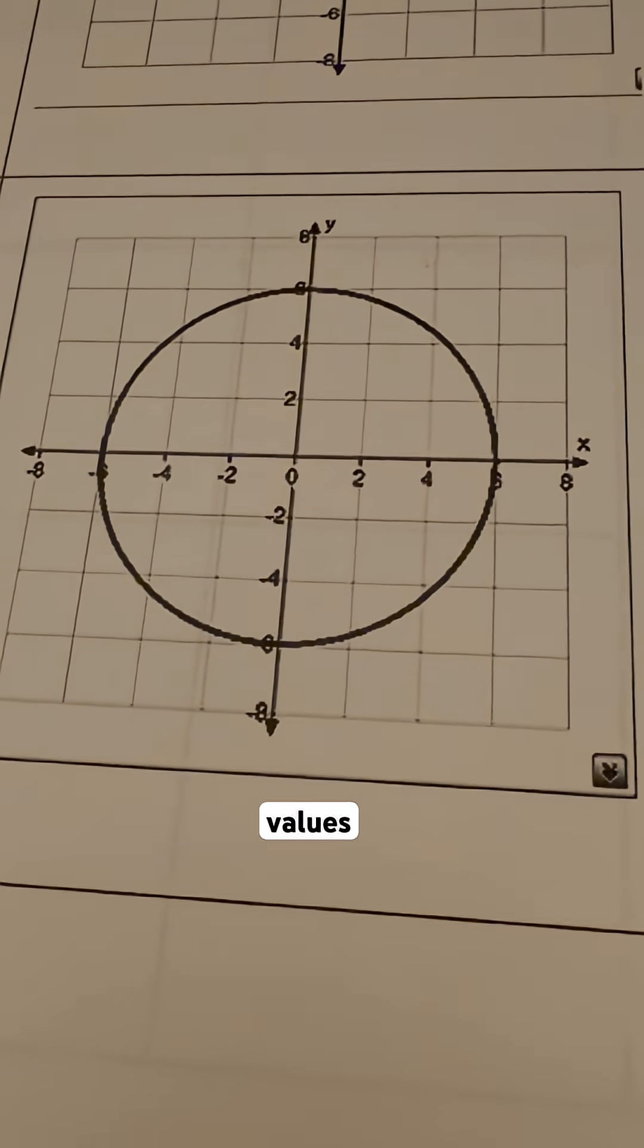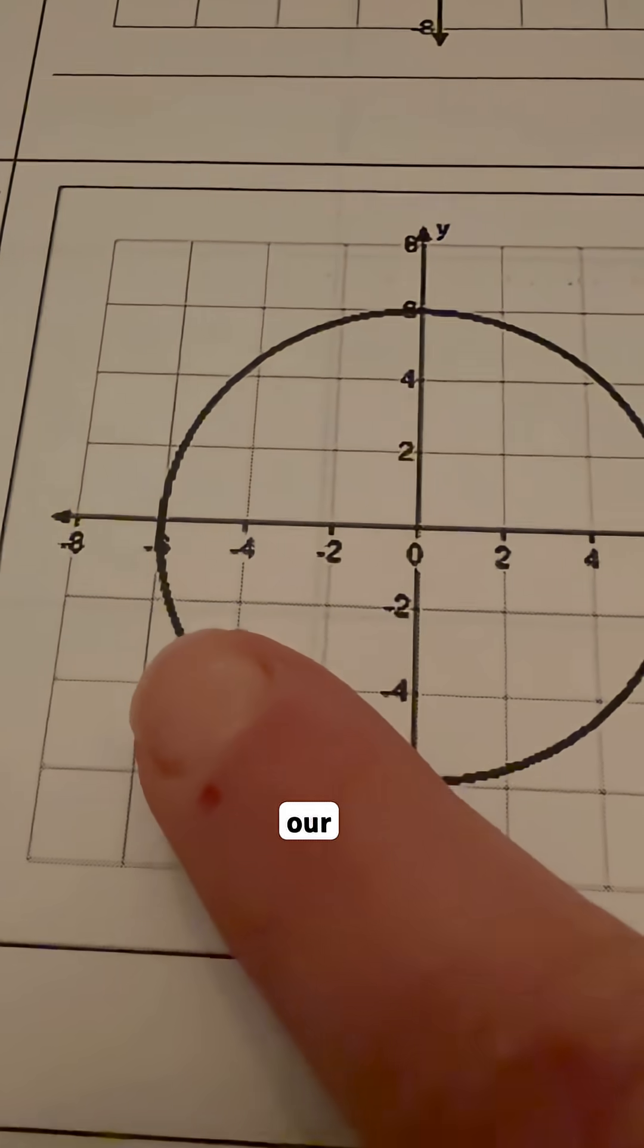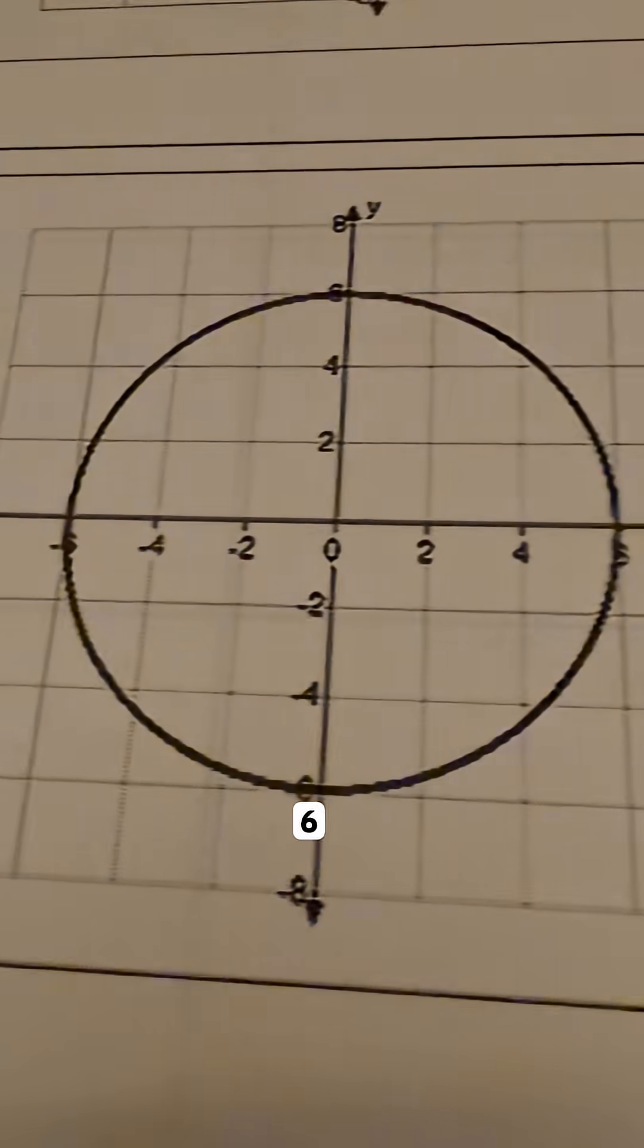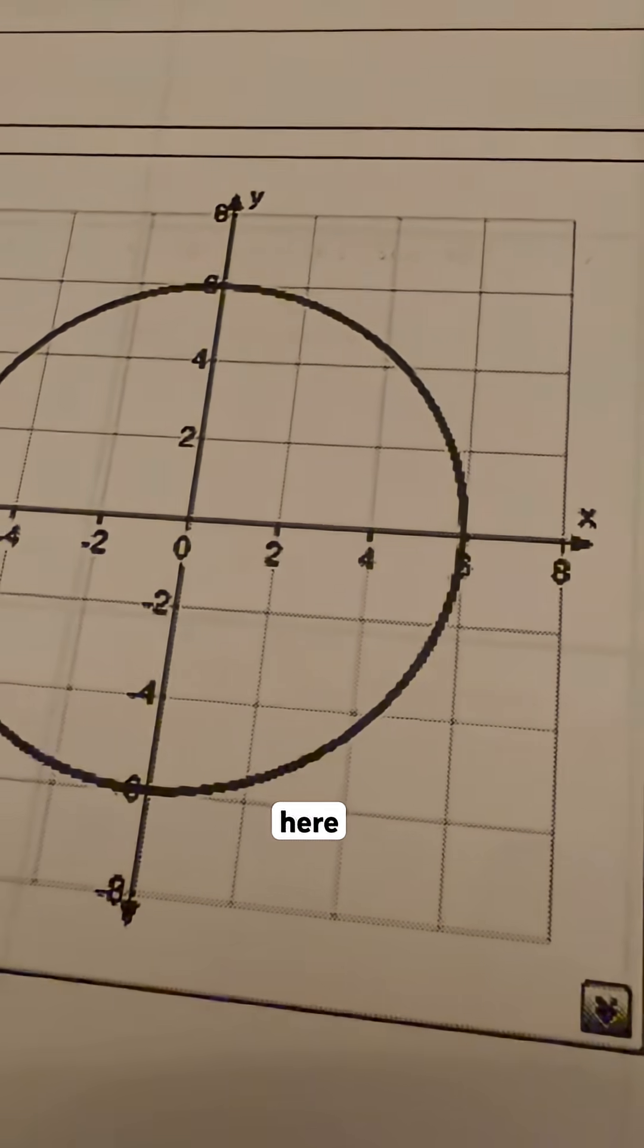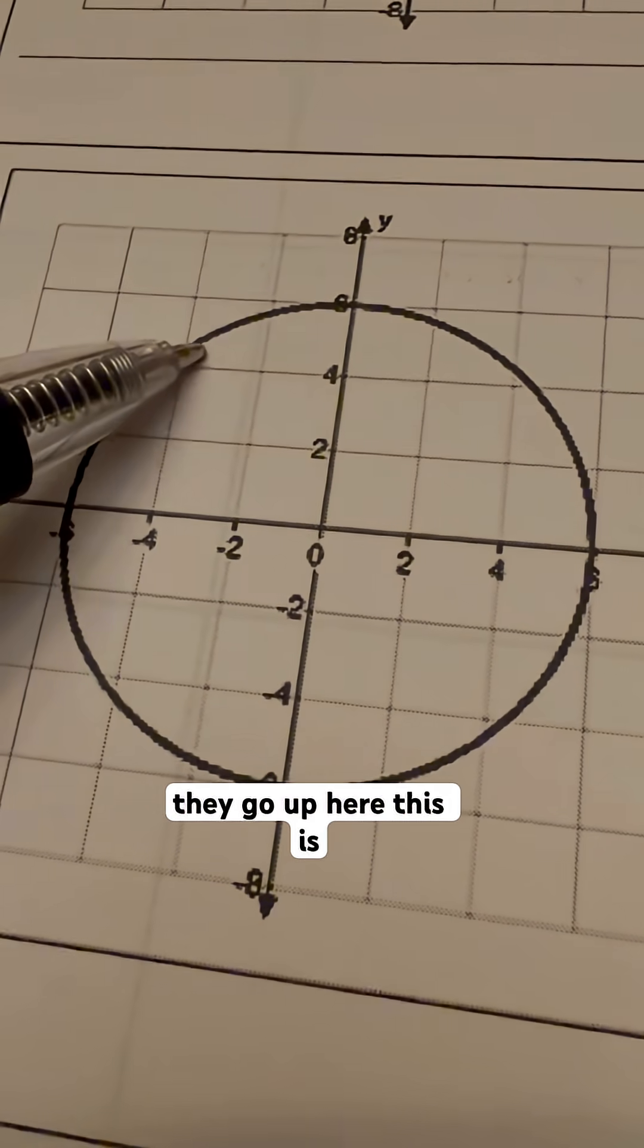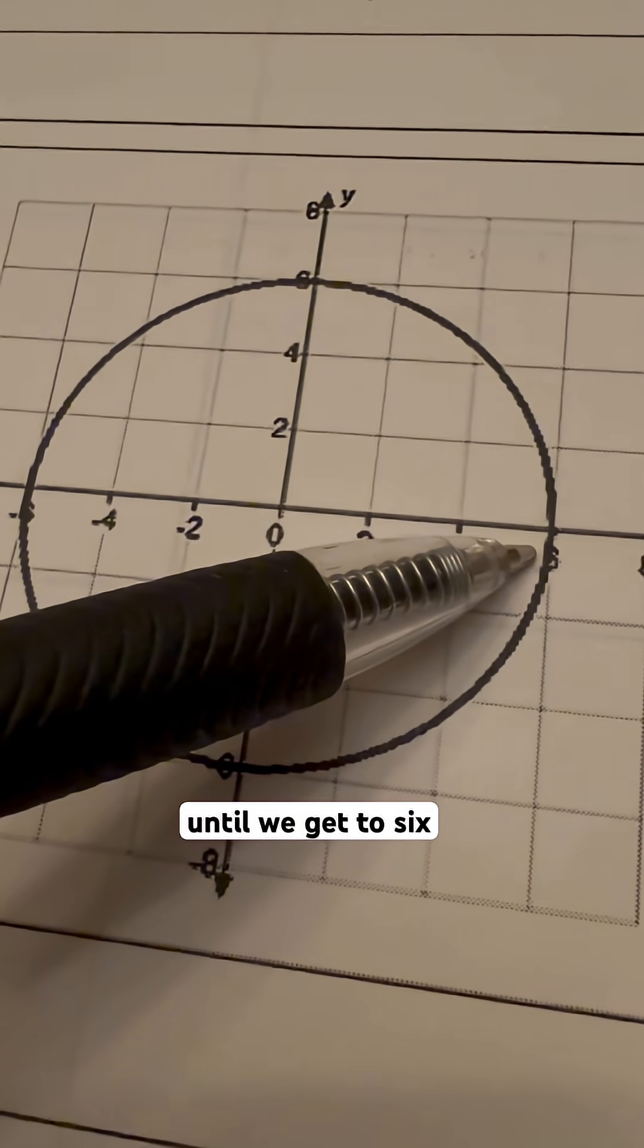So the domain values are our x values. As you can see, if I look really closely to our graph, our x values go all the way from negative 6 all the way over here to a positive 6 right here. So everything in between is covered because as they go up here, this is getting closer to 0, and then it goes farther away from 0 until we get to 6.